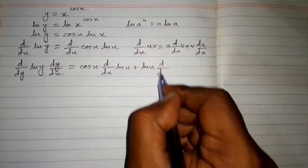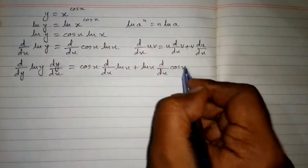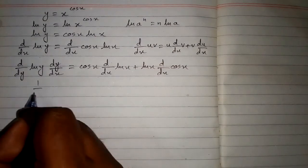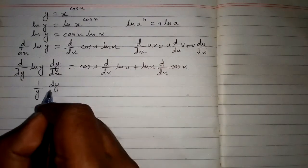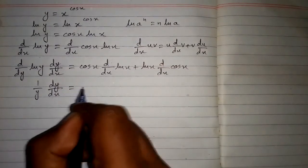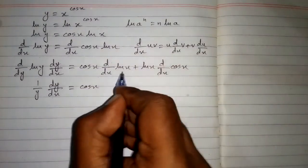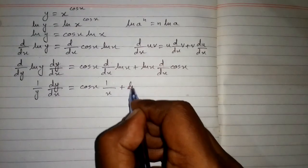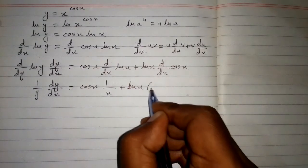Now the derivative of ln y is 1 upon y. And the derivative of ln x is 1 upon x. And the derivative of cos x is minus sin x.